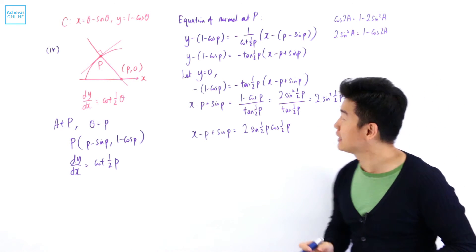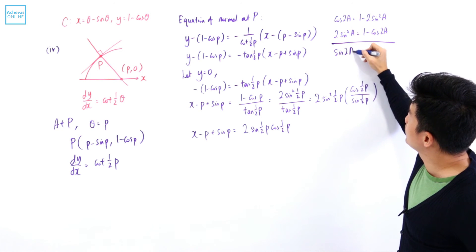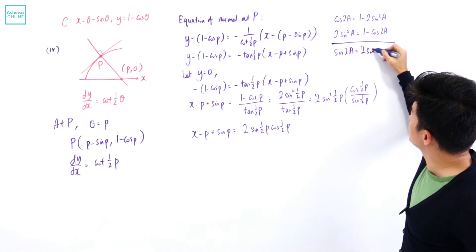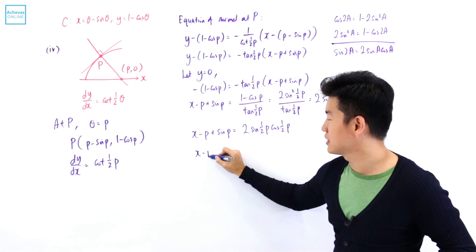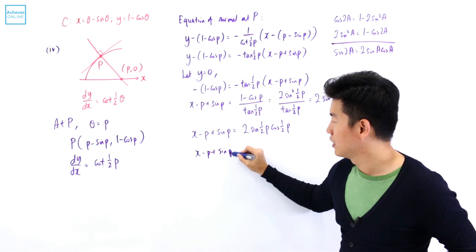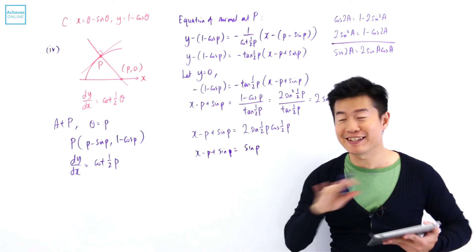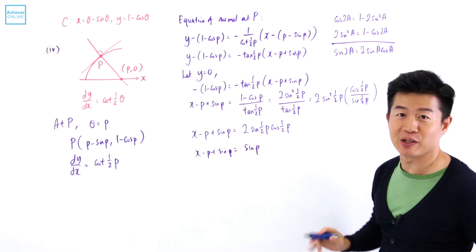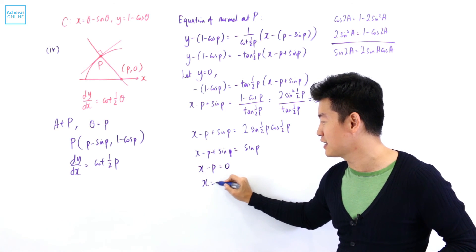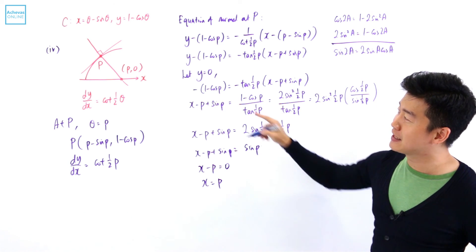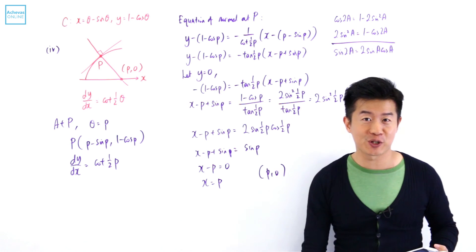Now using the identity sine 2A equals 2 sine A cosine A, we see that 2 sine of half P times cosine of half P equals sine P. So x minus P plus sine P equals sine P, and since sine P and sine P cancel, we get x minus P equals 0, meaning x equals P. Therefore the x-intercept is at the point P₀, which is what the question asked us to show.